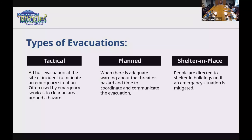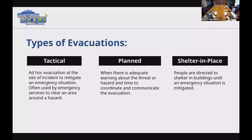Another type is shelter-in-place, where people are directed to shelter in buildings until an emergency situation has been mitigated. This is often used in airborne emergencies when you don't want people exiting a building. We use shelter-in-place at our rec center for ammonia leaks, because people aren't aware of where the hazard is. While it doesn't typically get thought of as an evacuation, it is considered one because you are controlling the population.